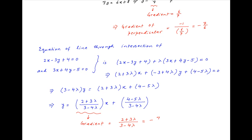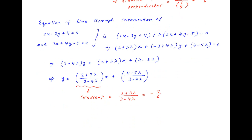And this gradient is equal to minus 7/6, because we are given that this line is perpendicular to the line 6x minus 7y plus 8 is equal to 0. Cross multiplying, we get 12 plus 18lambda is equal to minus 21 plus 28lambda, and therefore 10lambda is equal to 33, which implies that lambda is equal to 33/10.